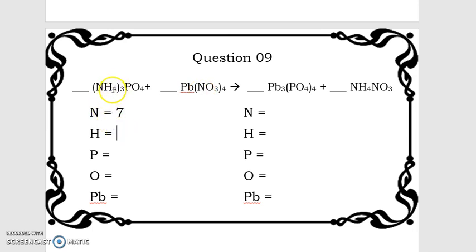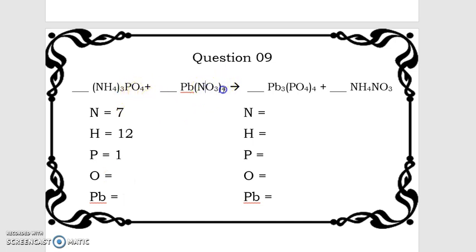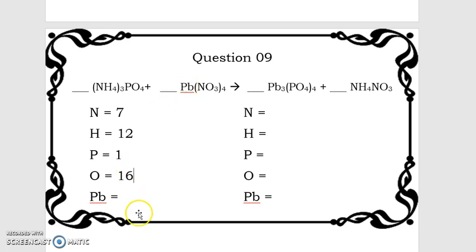There are 4 hydrogens here times 3 for the parentheses — 4 times 3 is going to be 12. Phosphorus: I have 1 because there is no subscript. Oxygen: I have 4, and I have to add in the oxygens over here as well. 3 times 4 is 12. 12 plus 4 gives us 16 oxygens total. And I have 1 lead.